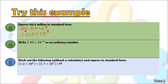Now how about writing this one back as an ordinary number? This means working out how many zeros there should be. We should have four zeros — one, two, three, four — and you always place a decimal point in nicely.